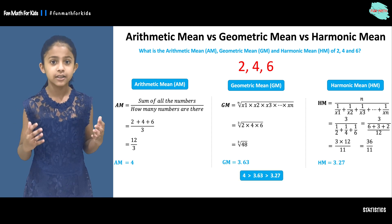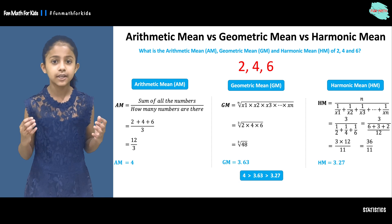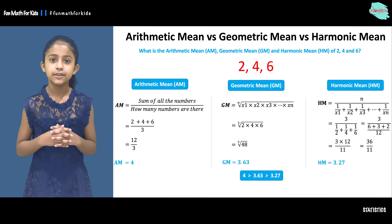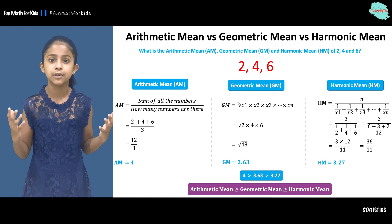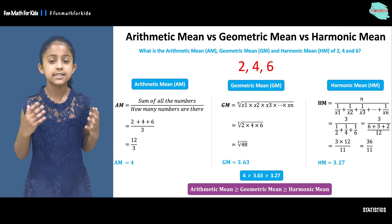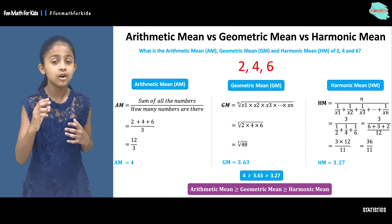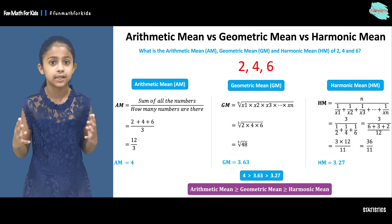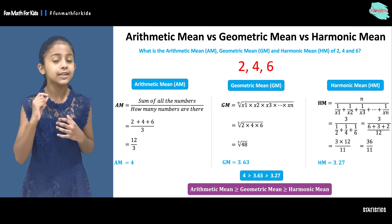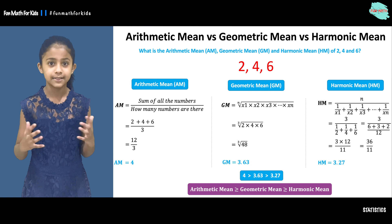So here, 4 is greater than 3.63, which is greater than 3.27. There is something very important to remember: the arithmetic mean is always either greater than or equal to the geometric mean, and the geometric mean is either greater than or equal to the harmonic mean. That is all about comparing the arithmetic mean, geometric mean, and harmonic mean together.